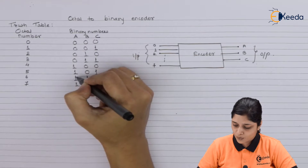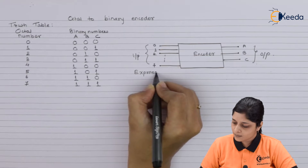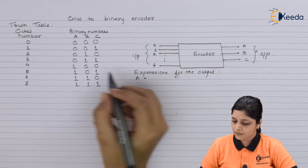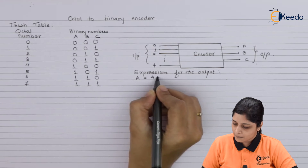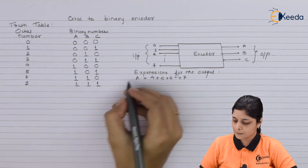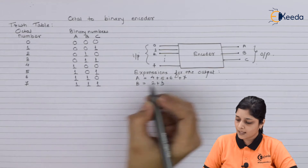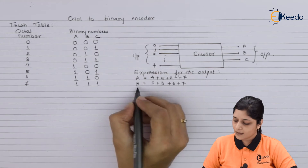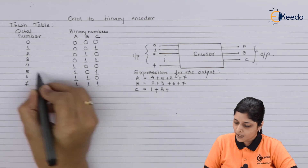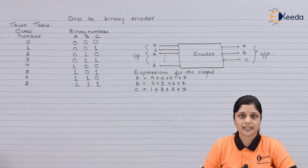Now, we have to search for 1s present for each output bit. The Boolean expressions we are getting for the outputs are: A equals 4 + 5 + 6 + 7, because it is 1 for all those octal numbers. For B, we have 2 + 3 + 6 + 7. And for C, we have 1 + 3 + 5 + 7. In this way, you write the expressions for A, B, and C.